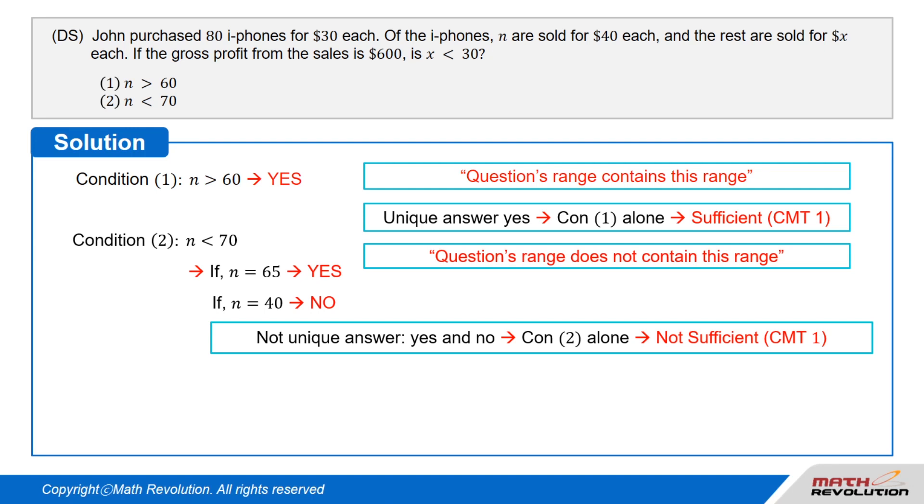Therefore, the condition is not sufficient by CMT1, which states that if you are getting both yes and no from the same condition, the condition is not sufficient. Condition 1 alone is sufficient. So, A is the correct answer.